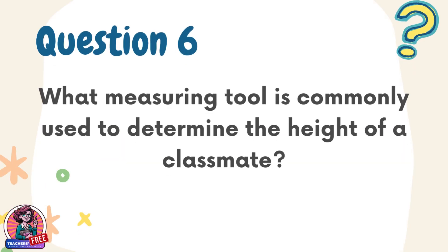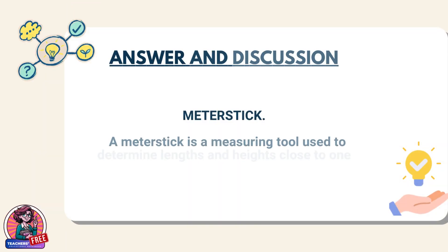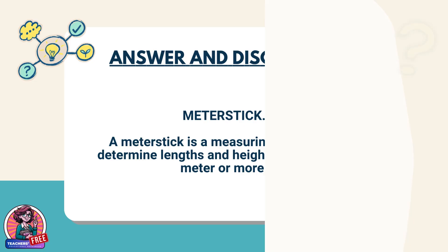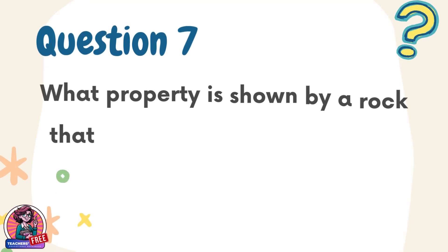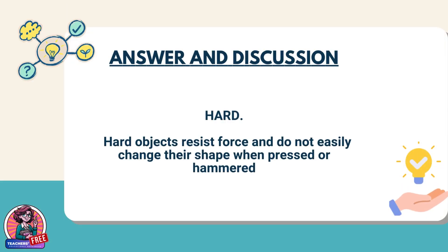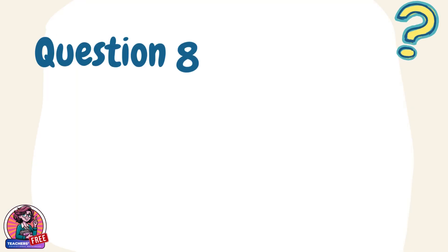Question 6. What measuring tool is commonly used to determine the height of a classmate? Answer: Meter stick. A meter stick is a measuring tool used to determine lengths and heights close to one meter or more. Question 7. What property is shown by a rock that cannot be bent or squished easily? Answer: Hard. Hard objects resist force and do not easily change their shape when pressed or hammered.